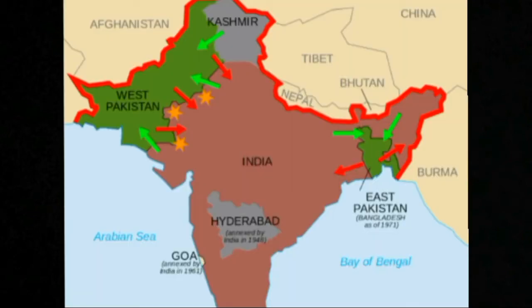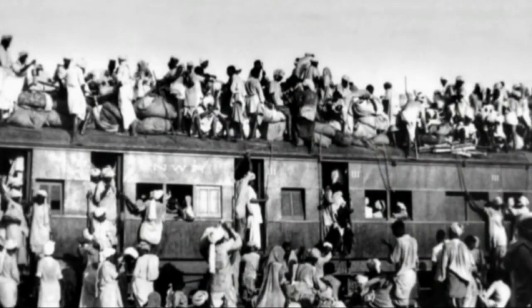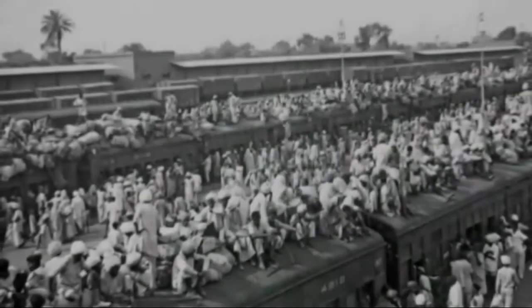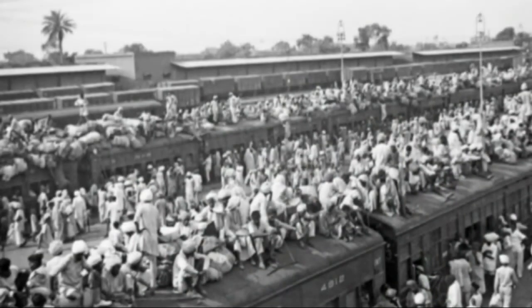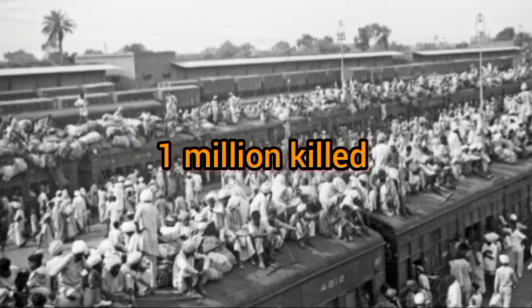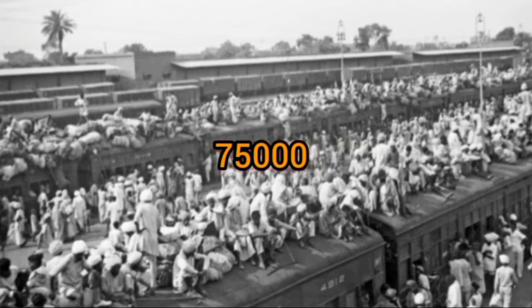Soon after the partition, there was a mass migration with an estimated 14 million migrants moving from both sides. Muslims from India migrated to Pakistan while Hindus and Sikhs migrated to India. This was the biggest migration ever recorded in history and was one of the biggest violations of human rights, with nearly 1 million people killed.